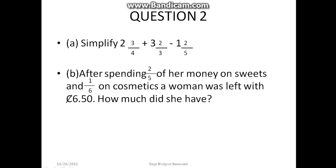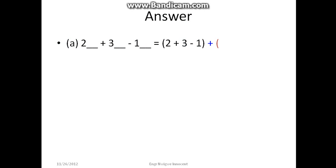Answer 2(a): 2 3/4 + 3 2/5 - 1 2/3 equals (2 + 3 - 1) + (3/4 + 2/5 - 2/3). This gives us 4 + (3/4 + 2/5 - 2/3). The LCM of 4, 5, and 3 is 60.